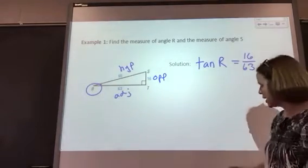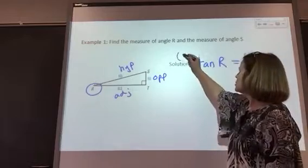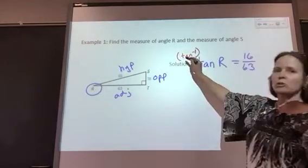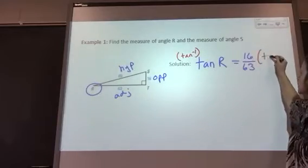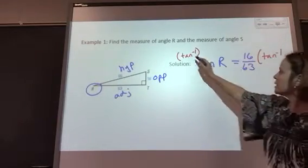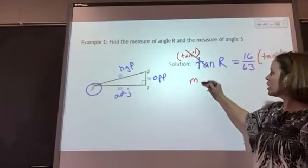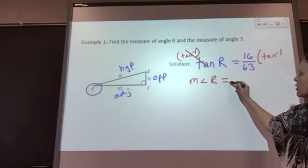To undo the tan, we are going to do the inverse tan. We've already shown you where this is on your calculator. That eliminates the tangent here, and I'm going to find the measure of angle R.